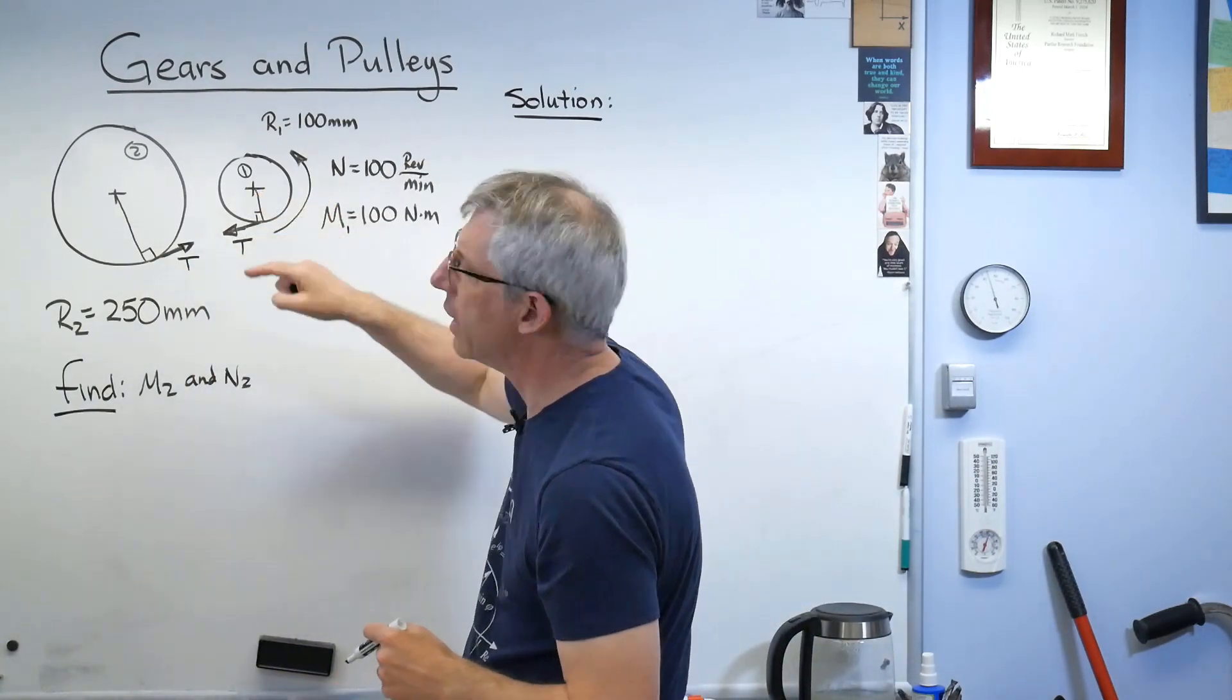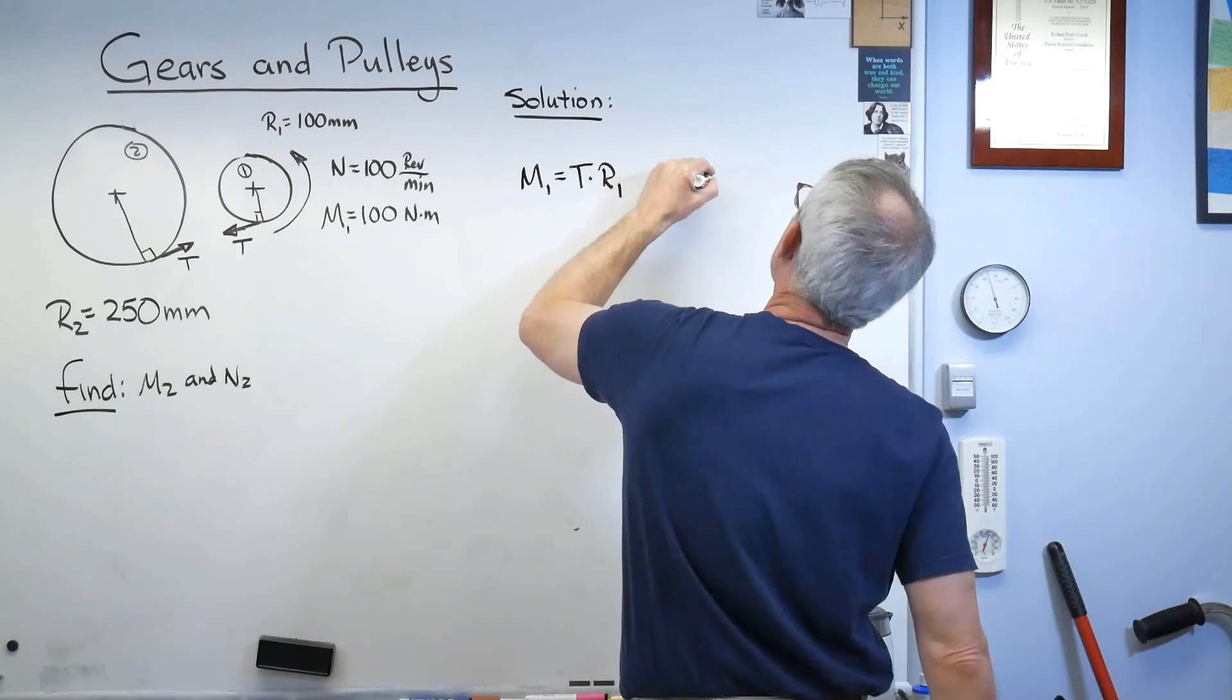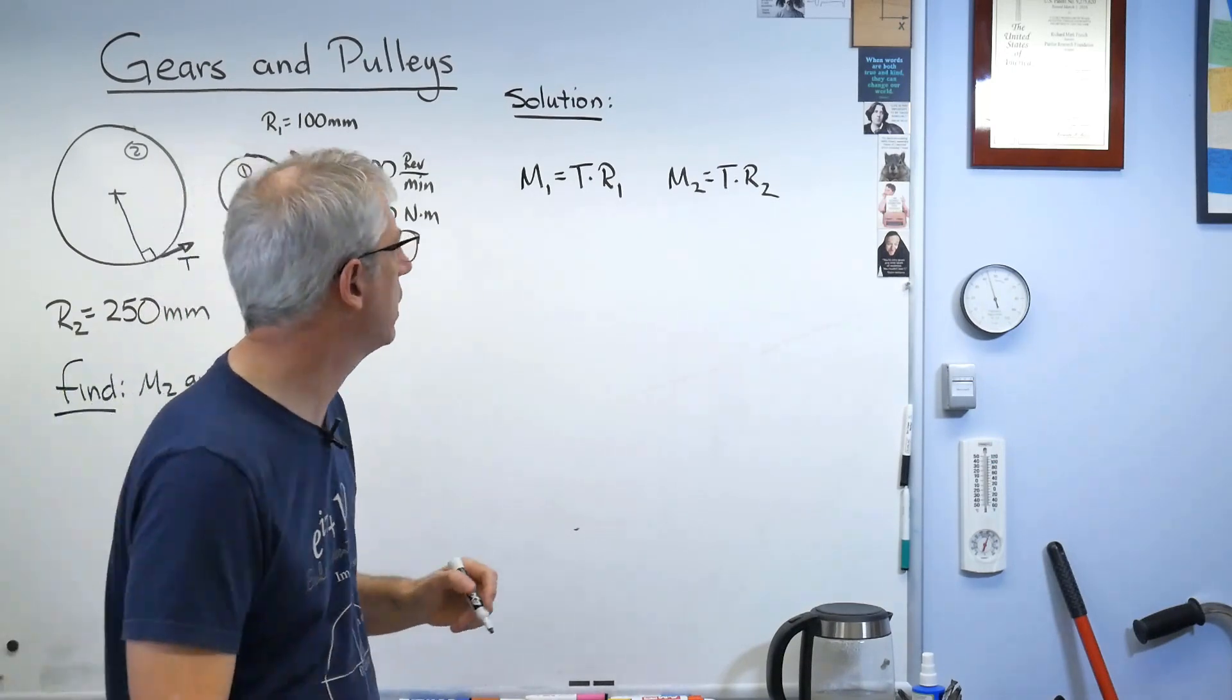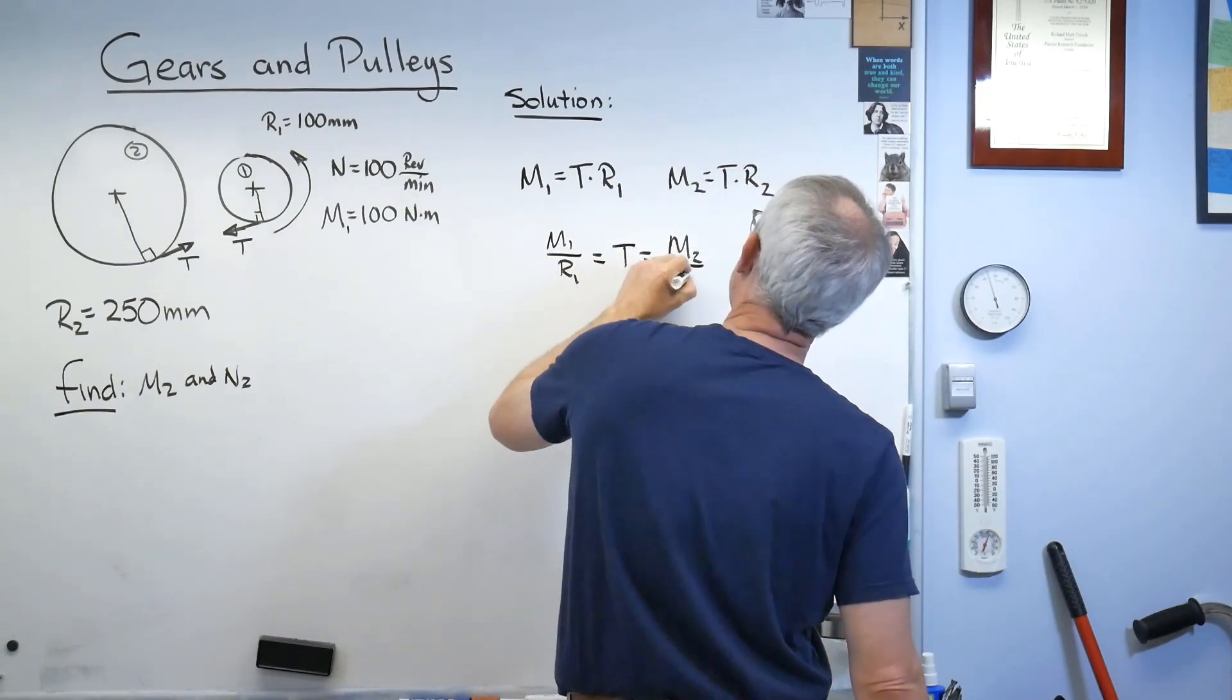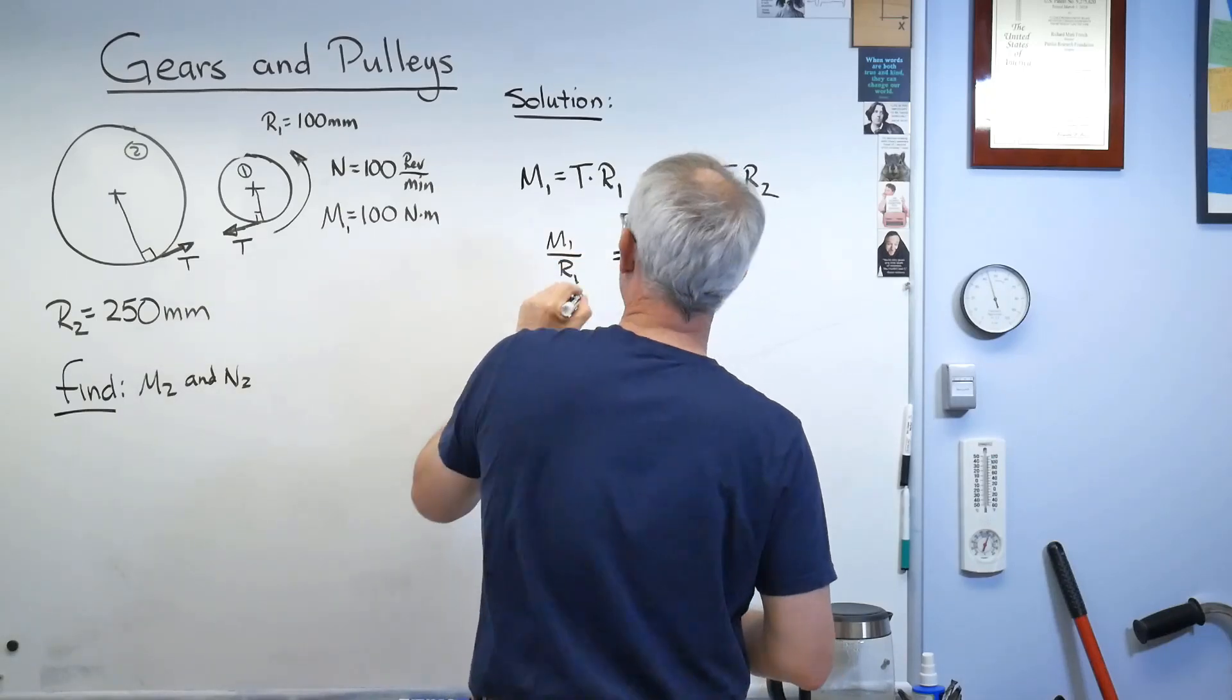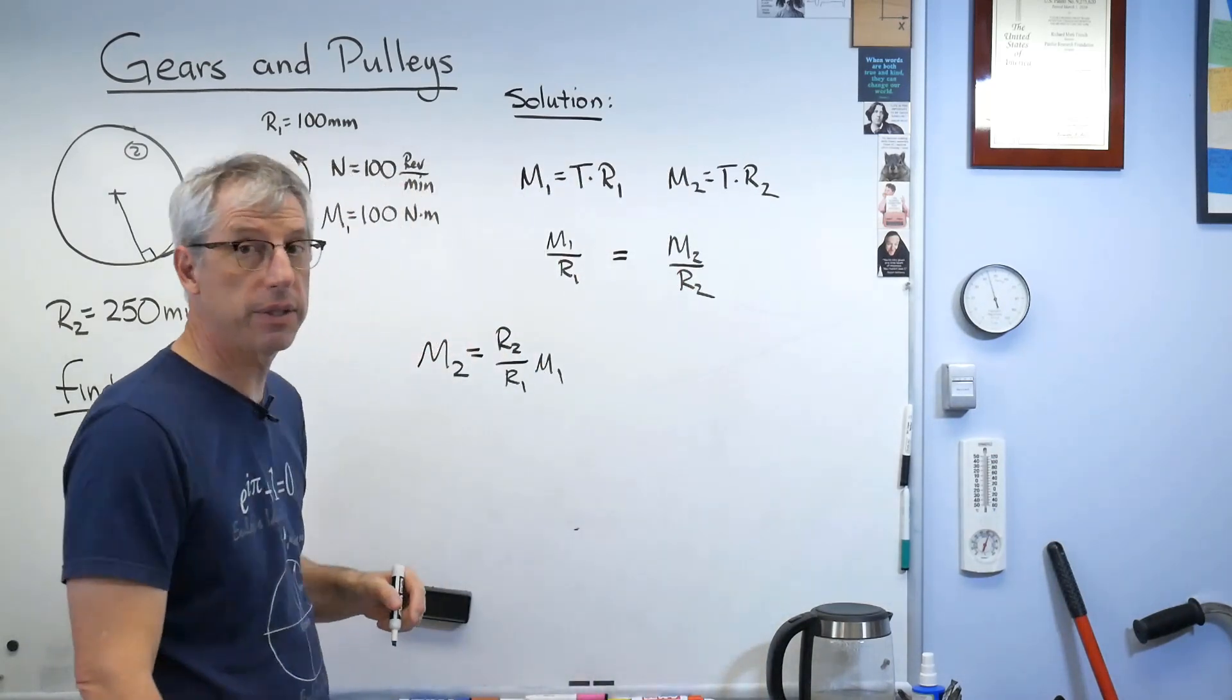Tension force acting at a perpendicular distance. I'm thinking moment. How about you? Let's do this. M1 equals T times R1 and M2 is T times R2. Now we know the tension is the same in both places. I don't actually need to know the tension. It's not asked for in the problem. So let's try something here. Let's divide through by radius. Well, I divide through by radius on both of them. So if they both equal tension, they must equal each other, right? So I can do this.